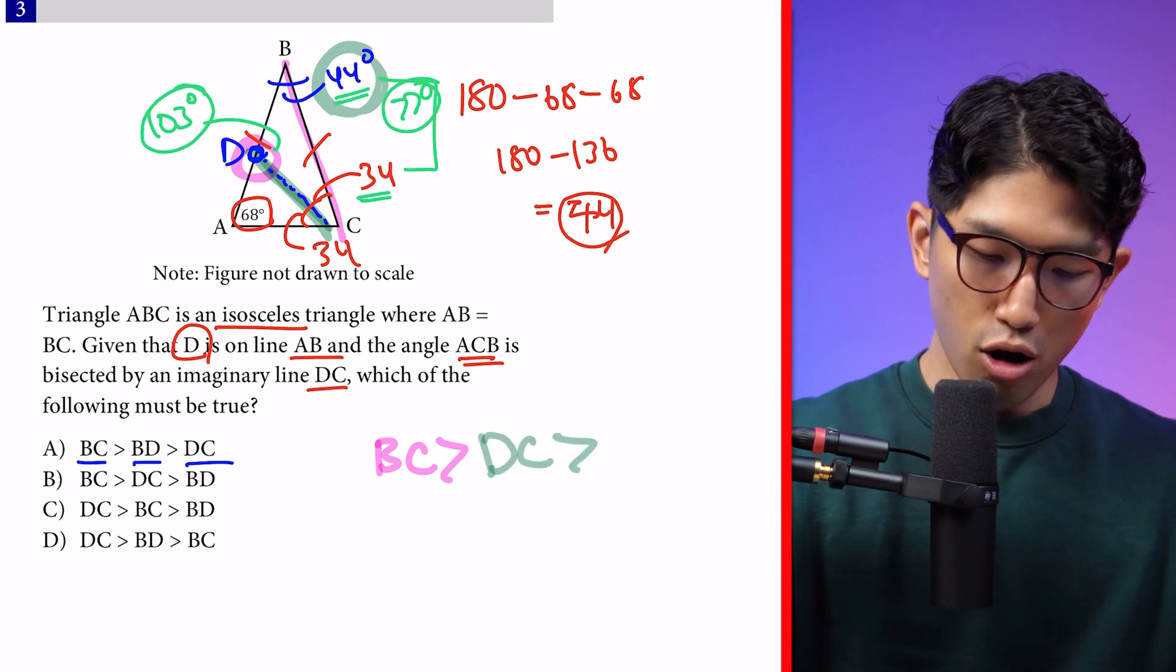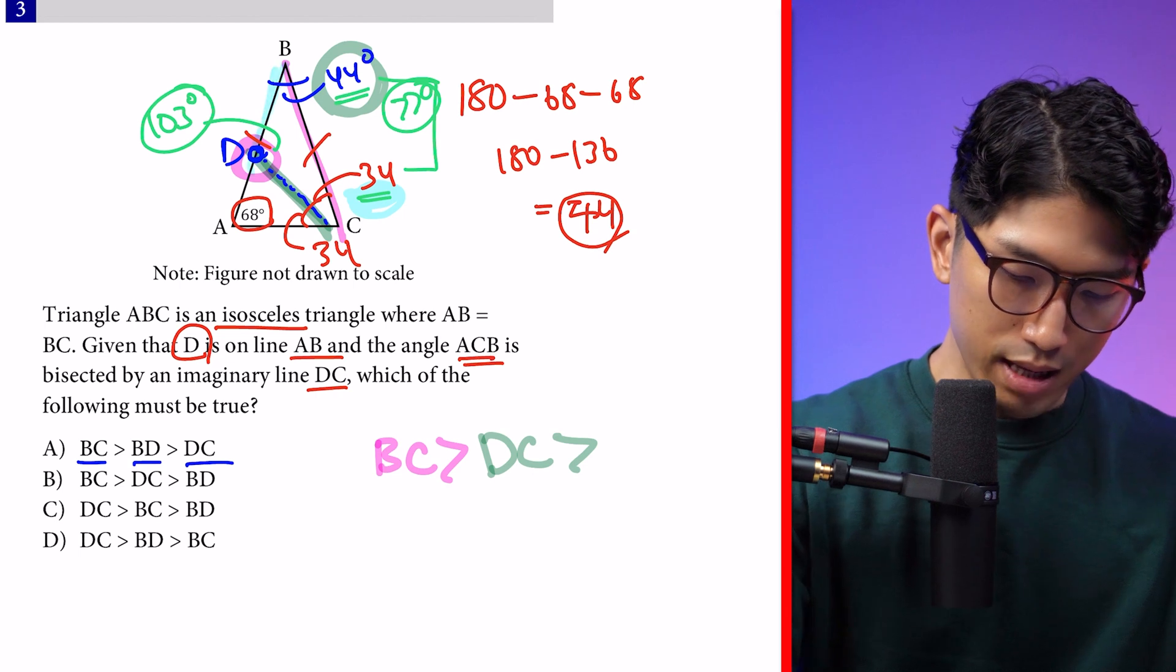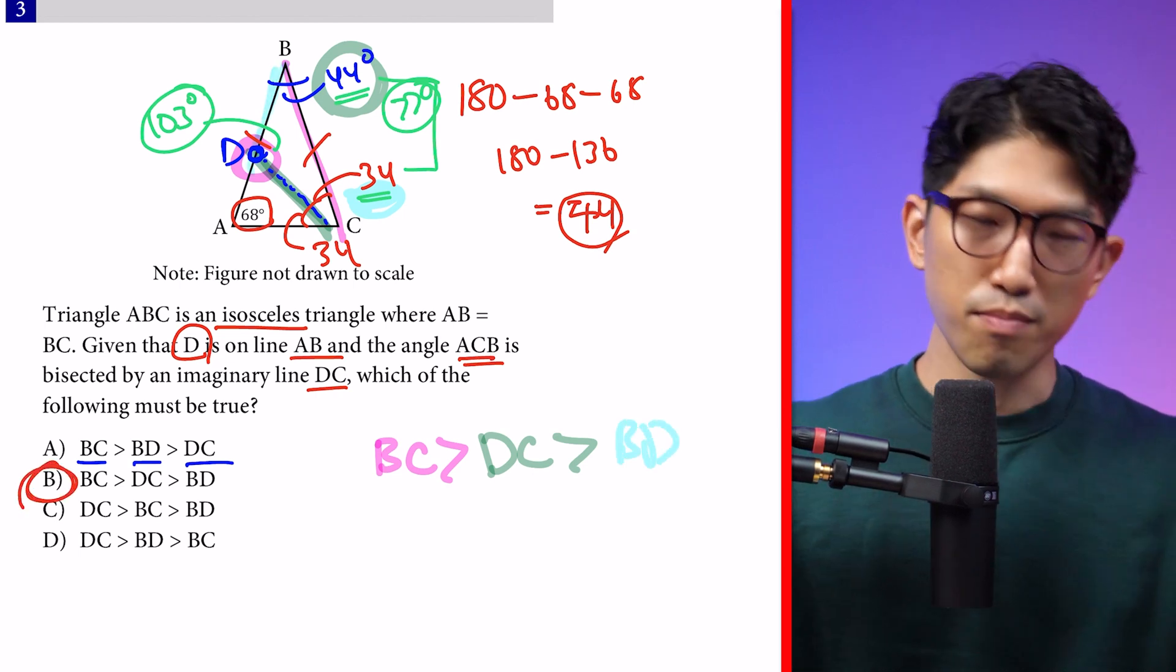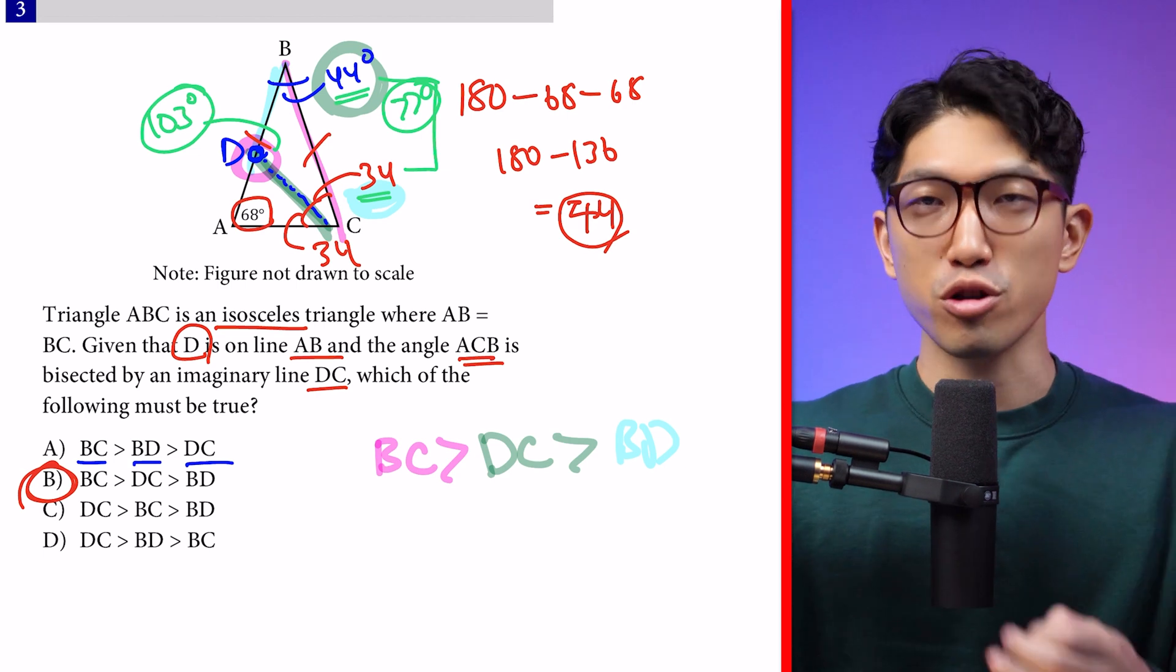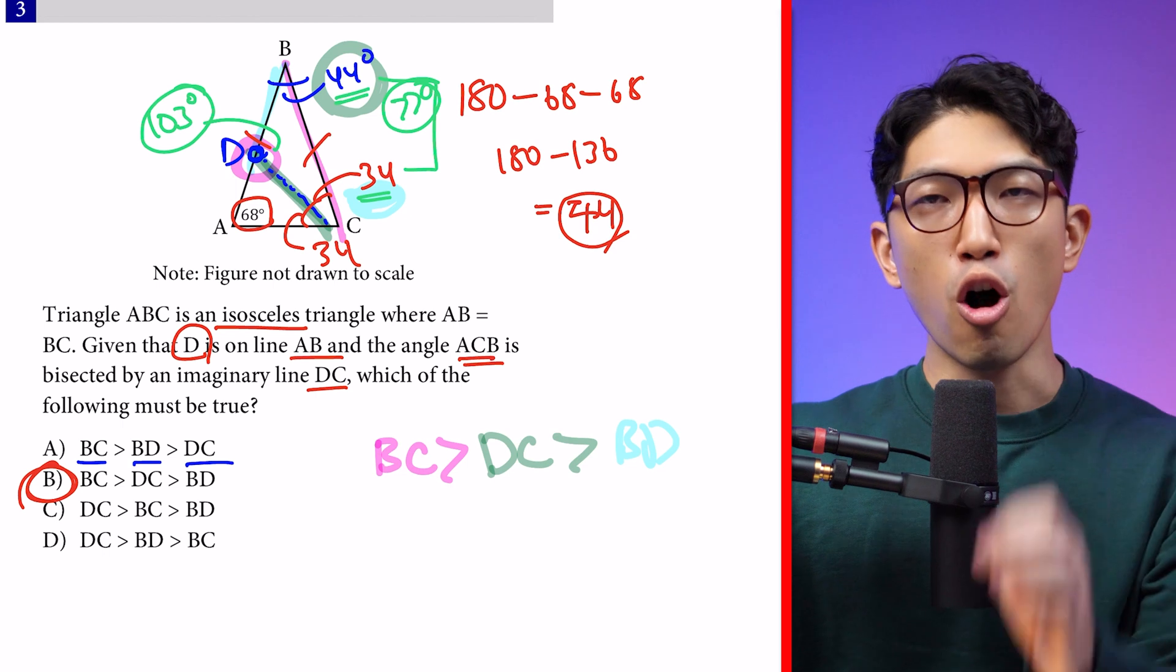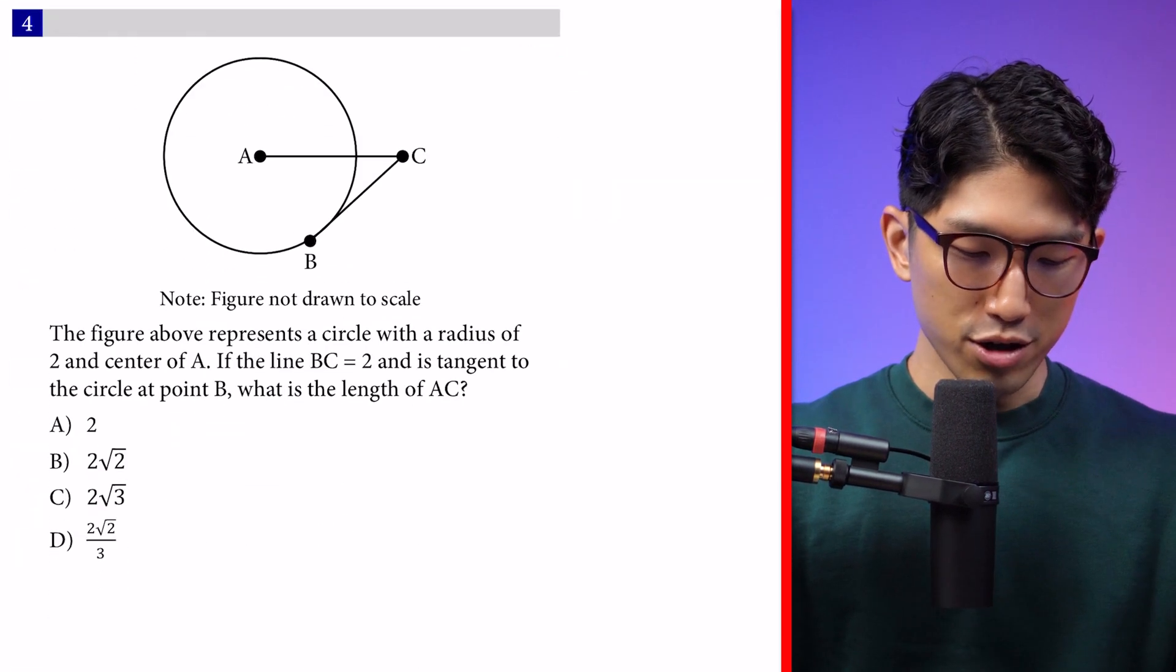We know DC is going to be the next longest length. Lastly, 34 is the smallest, which means BD is the shortest length. So our answer is choice B. One of the key concepts you have to know for triangles is the direct relationship rule. The bigger the angle, the longer the opposite corresponding side length.